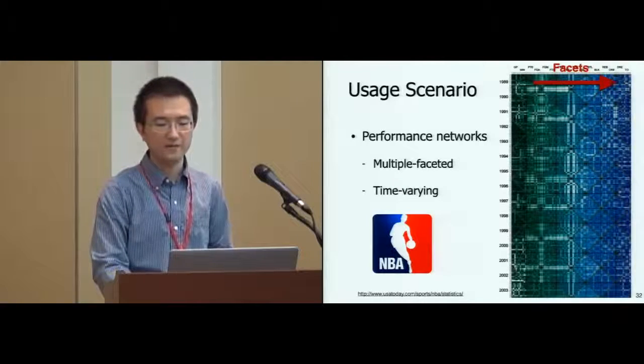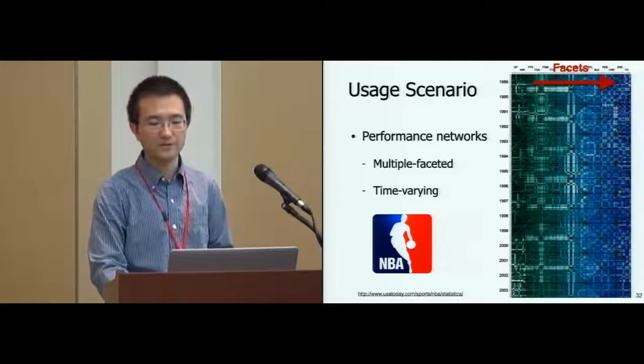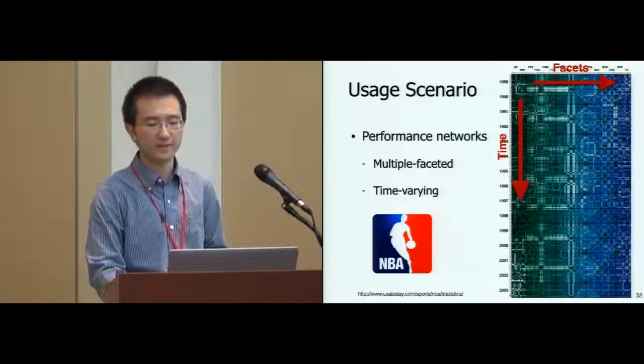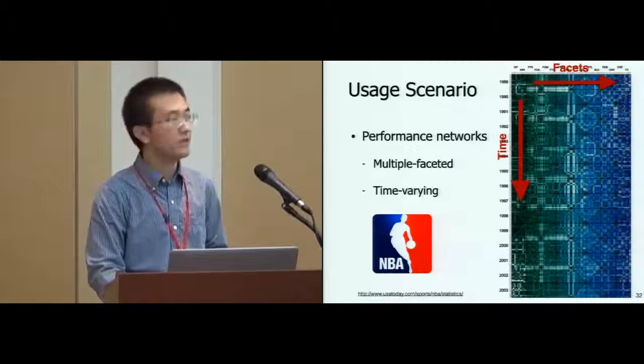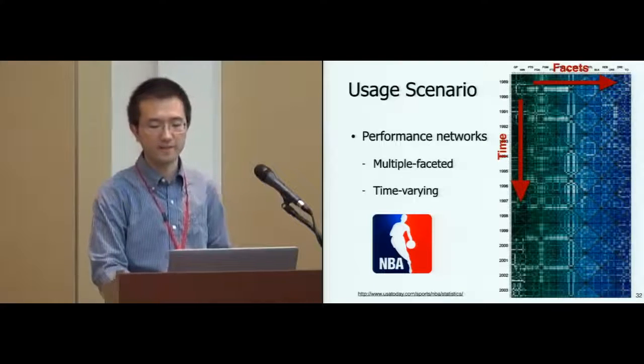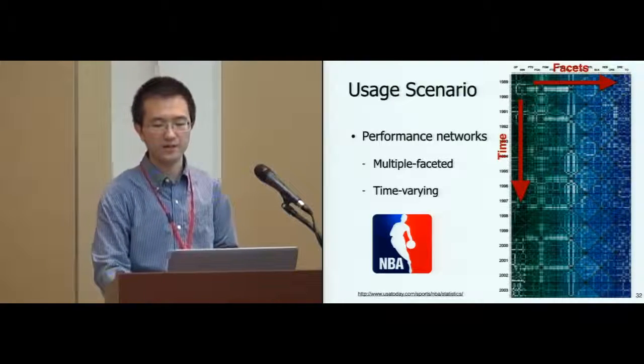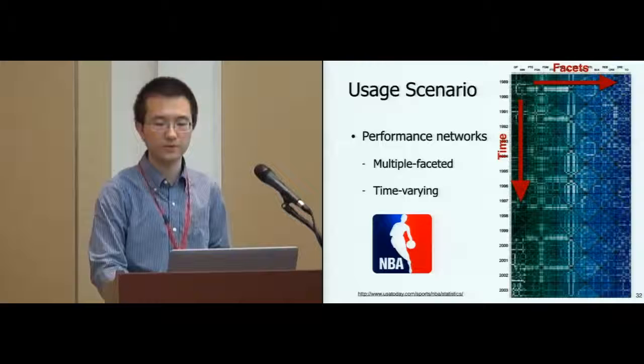Matrices of different facets are tiled horizontally, while matrices of different time steps are tiled vertically. The color of cells encodes connections as shades of gray. Matrices of nearby facets are colored similarly. The opacity of a cell encodes the similarity of performance between players.